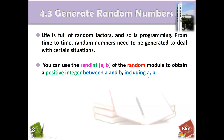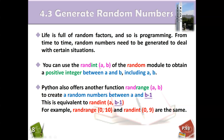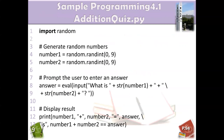I'll also introduce `randrange`. Notice I use a different color to remind you — `randrange` does NOT include b. So it creates a random number from a up to b minus one. You have to be careful whether you use `randint` or `randrange`. Using `randrange(0, 10)` is equivalent to `randint(0, 9)`, because `randrange` won't include 10.